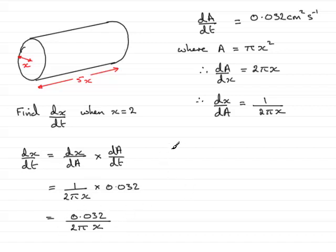Now we're looking for a particular instance here, and this is when x is 2. So all I need to do is substitute 2 in dx by dt.